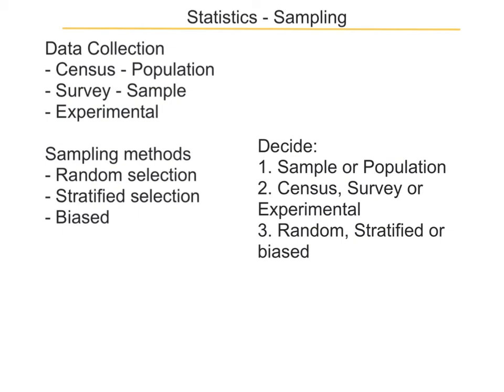In a survey, we ask some of the people. An example of that is the polls that come before an election, where they ask a couple of hundred people who they were going to vote for. The other way of collecting data is by using an experiment — actually measuring the data and doing enough measurements to be sure of your answer.